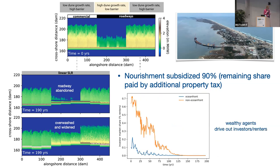Another way to look at this — I think more intuitively — is the investor market share, which is essentially the proportion of renters in the market. For non-oceanfront properties in this landscape change scenario, we start with a lot of renters, upwards of 70%. After 125 years, we have zero renters for non-oceanfront properties. Everybody living on the island is one of the wealthier agents who owns their home and is more tolerant of risk.